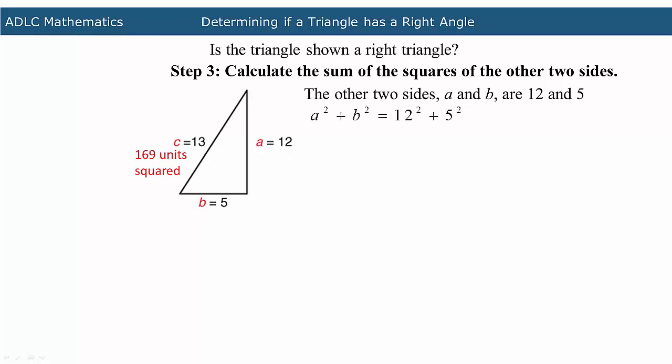So A squared plus B squared equals 12 squared plus 5 squared. When you calculate the square of 12 and 5, the equation becomes 144 plus 25. This results in an answer of 169 units squared.